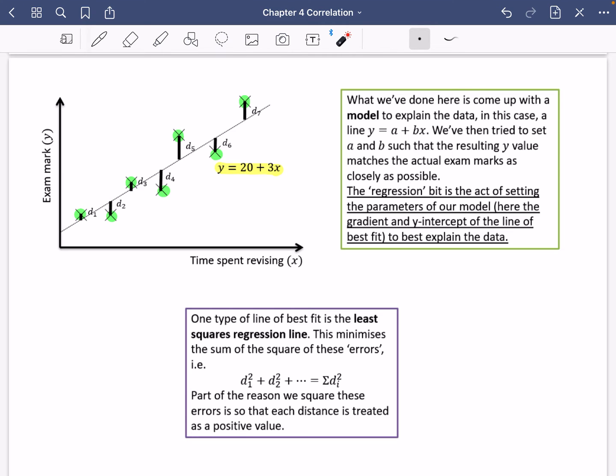If we can make these black lines here as small as possible, then we've got a really good line of best fit. Again, you're not going to be assessed on this. So we square them all and we try and minimize what these distances are. Part of the reason that we square these errors is so that each distance is treated as a positive value, because obviously some of them are above the line and some of them are below the line.